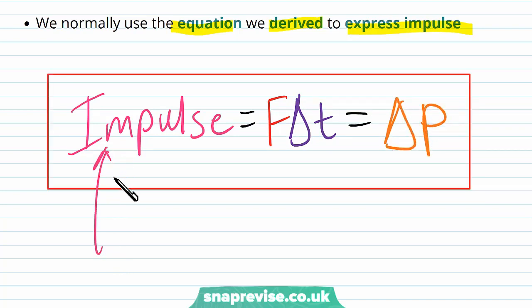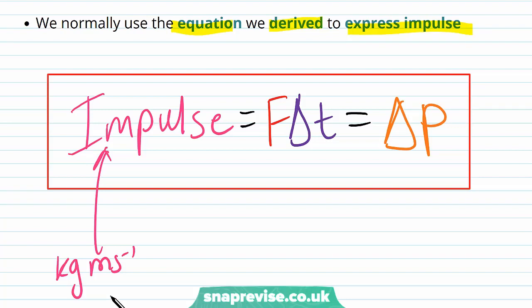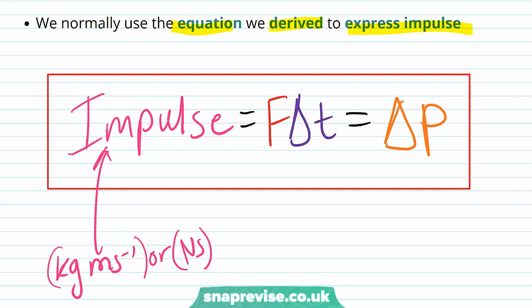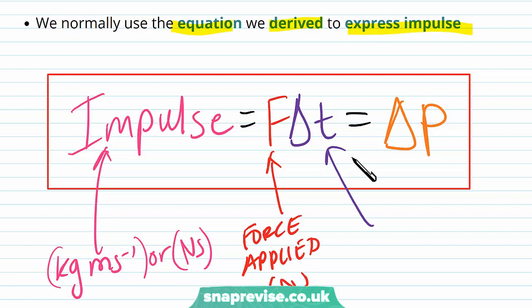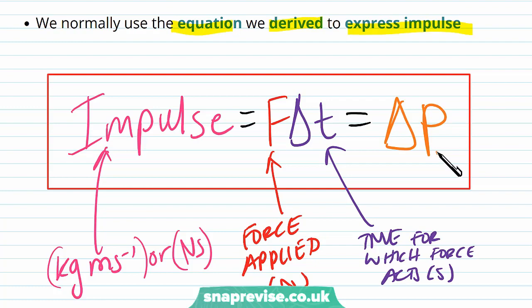The impulse can be given in two units, depending on whether you think of it as force times change in time or as change in momentum. If we think of it as change in momentum, it has units kilograms meters per second. Or if we think of it as force times time, it has units newton seconds — because force has units newtons and time has unit seconds, and we multiply them together. So this is the force applied in newtons, the time for which the force acts in seconds, and delta p is the change in momentum in kilograms meters per second.